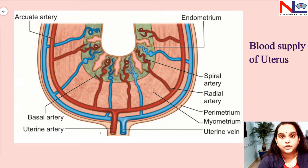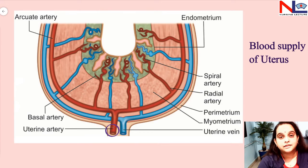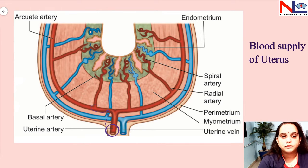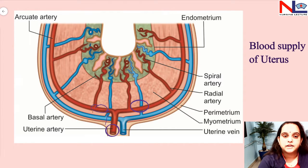There are three layers of the uterus. The outermost is the perimetrium, and in the perimetrium you can see the uterine artery, which is a branch of the anterior division of the internal iliac artery. This branch pierces the perimetrium and goes inside the myometrium, where it forms the arcuate artery.